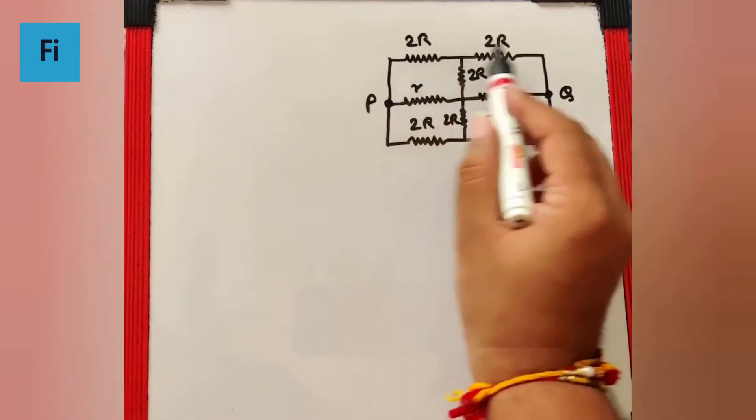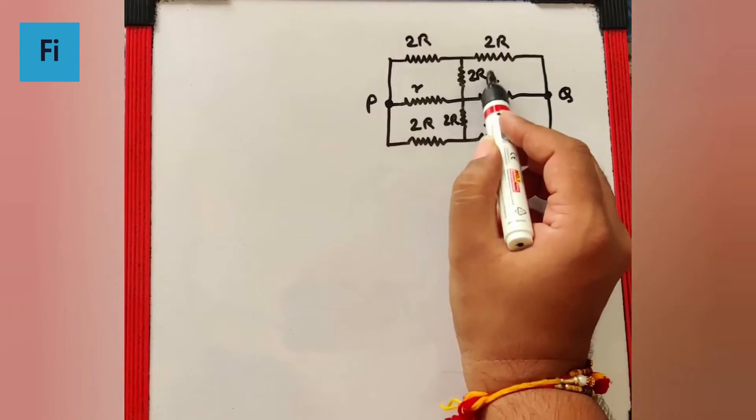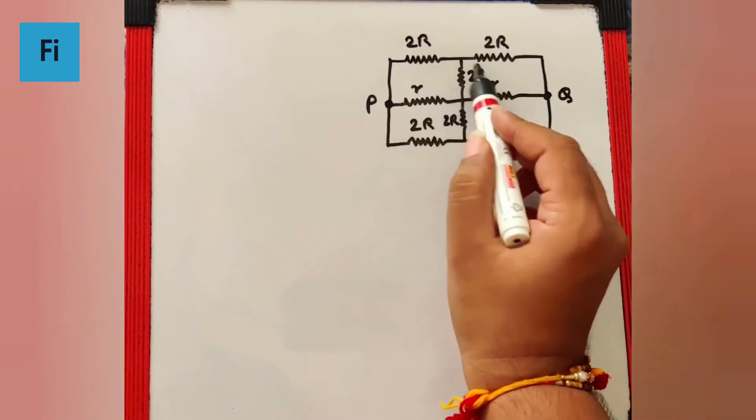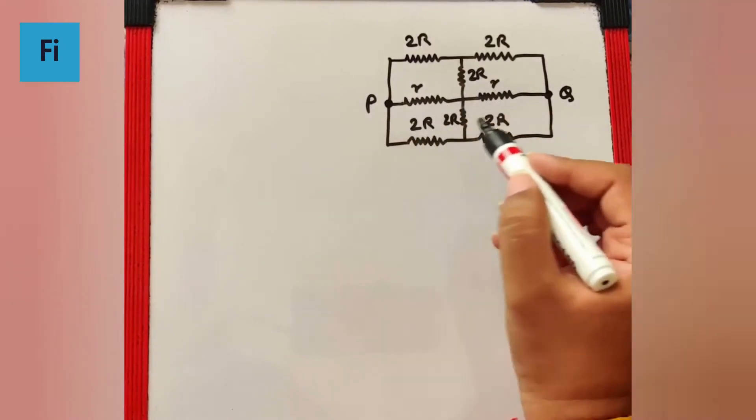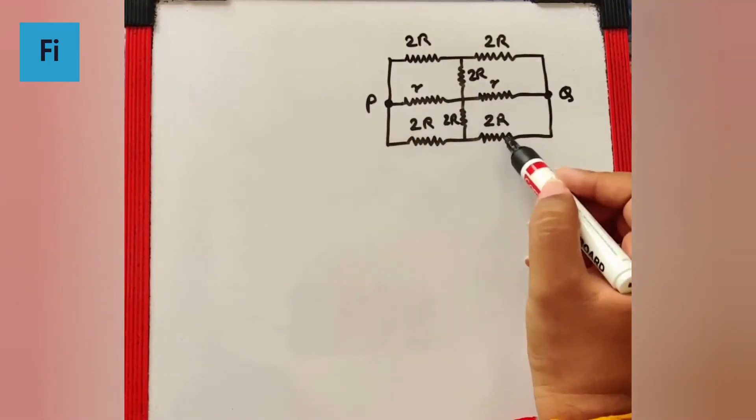Now if we look at the upper half side, I can say this part, this 2R is going to be redundant because it's a balanced Wheatstone network. Similarly, the lower part, I can say this is also a balanced Wheatstone network.